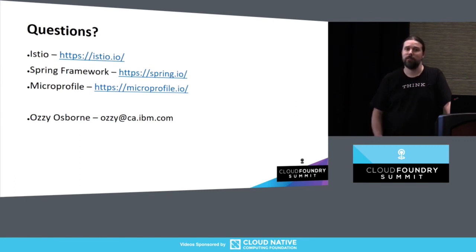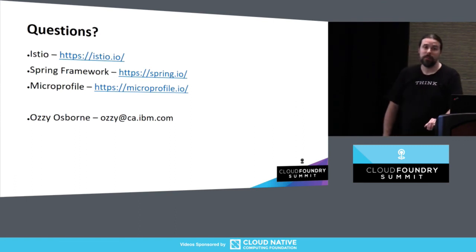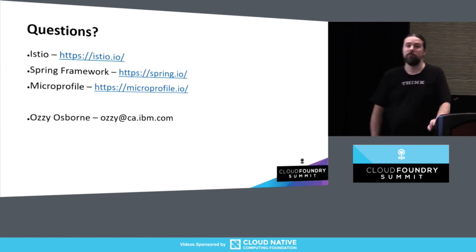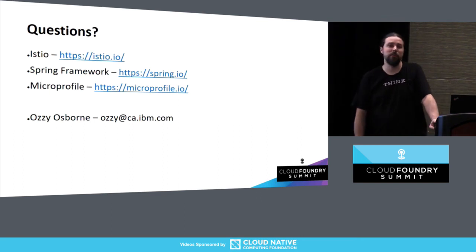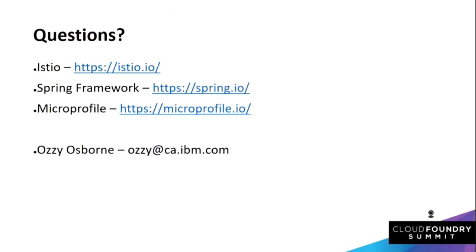That brings us to the end of what I wanted to cover. If you've got needs to go and find more, you can go to Istio at istio.io, Spring at spring.io, or MicroProfile at microprofile.io. Or you can come to Ozzy, but not at IO, because I'm not ozzy.io.io — that gets very confusing. So, any questions?